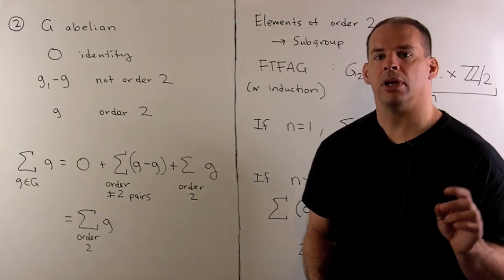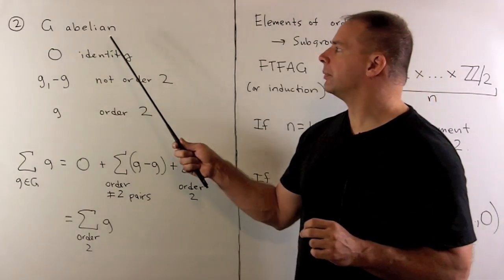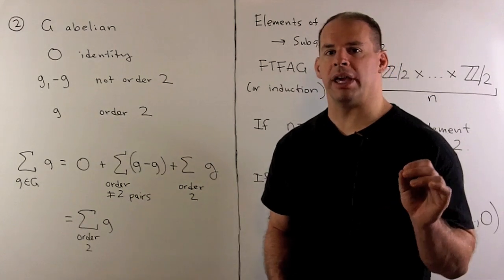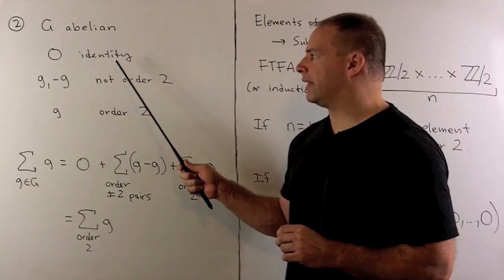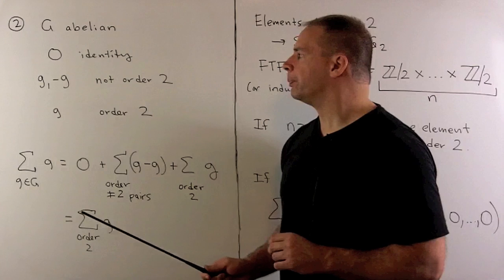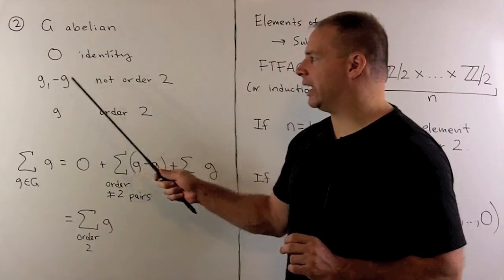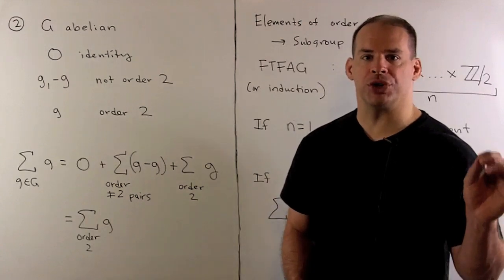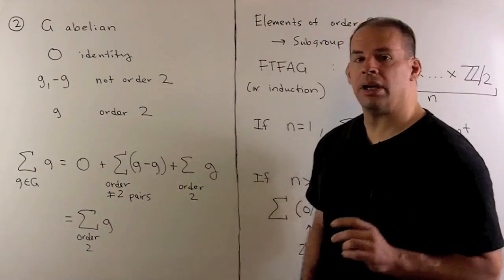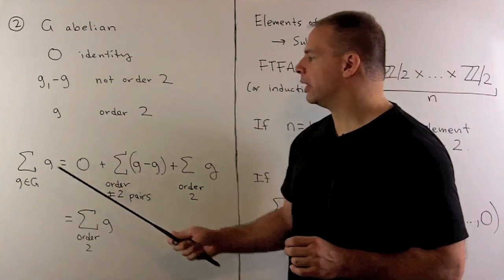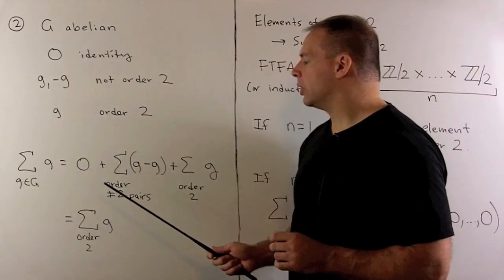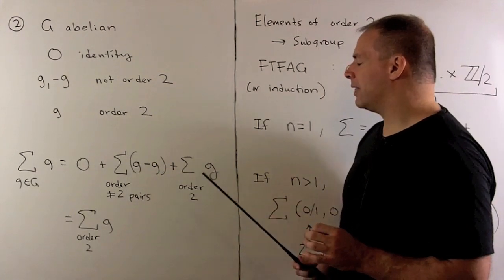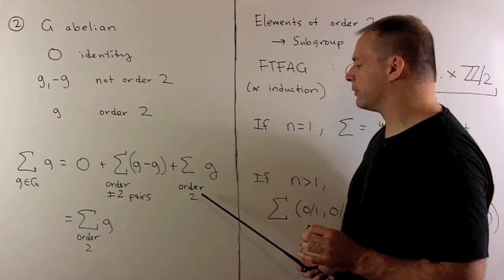For the second part, we assume that G is abelian. We'll have the same breakdown of our elements. Since we're writing group multiplication as addition, we'll write the identity element as 0. For inverse pairs, we'll have G and minus G. Then what's left over are our elements of order 2. We sum over the elements of the group: we have our identity element, we have our inverse pairs canceling out to give us 0, and then I'm left with the sum over all the elements of order 2.